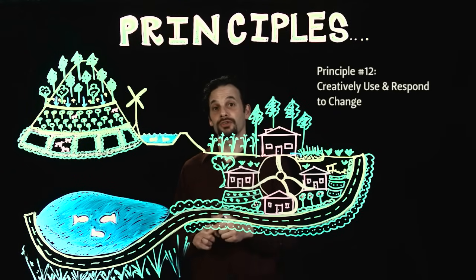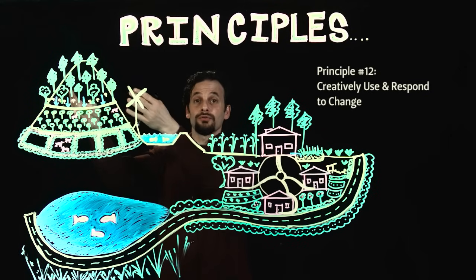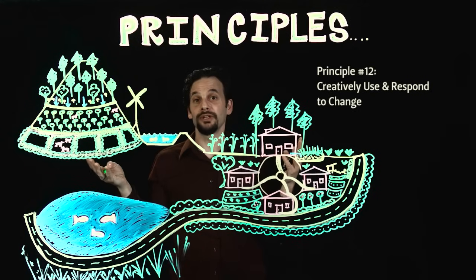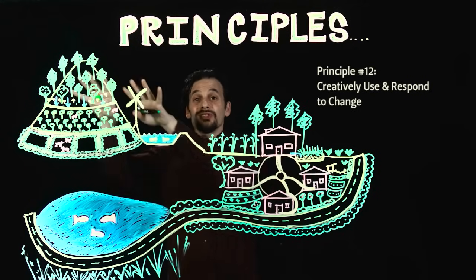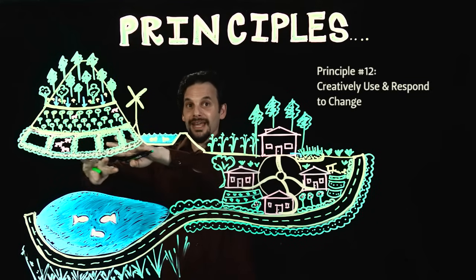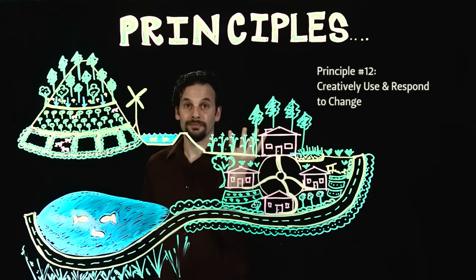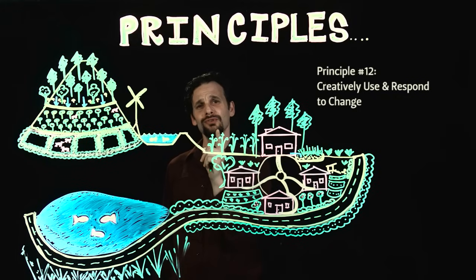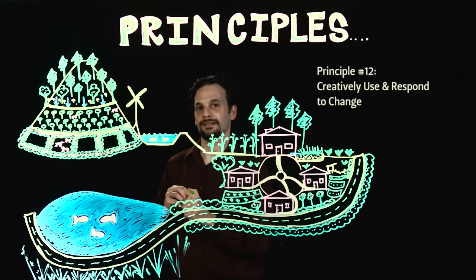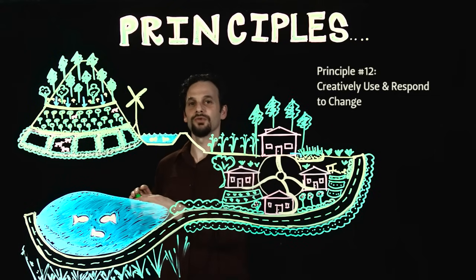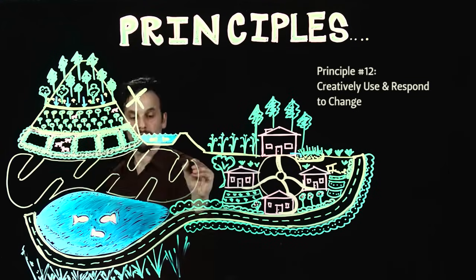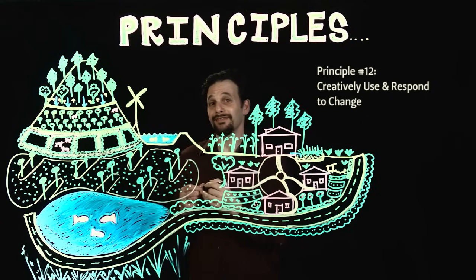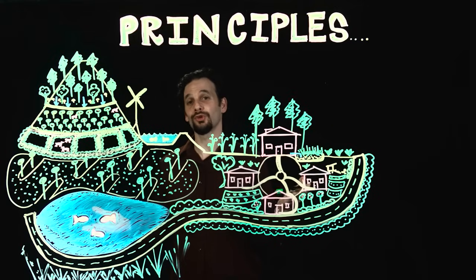Principle 12 is Creatively Use and Respond to Change. I noticed that with the orchards and hedgerows growing in, the forest soils growing spongier from the mushroom inoculation, and the soils building from the animal rotation, water has begun to move much more slowly down the hillside — so much so that this area at the bottom of the hill is becoming somewhat of a marsh. That wasn't what I planned, but I'm going to creatively use that change: I'll carve out some low areas that will stay really wet, which I can use to grow edible wetland plants, and simultaneously build up these peninsulas full of edge to grow productive trees which will get their roots down into the water table. I didn't even see that yield coming — but there you have it, the permaculture principles in action.